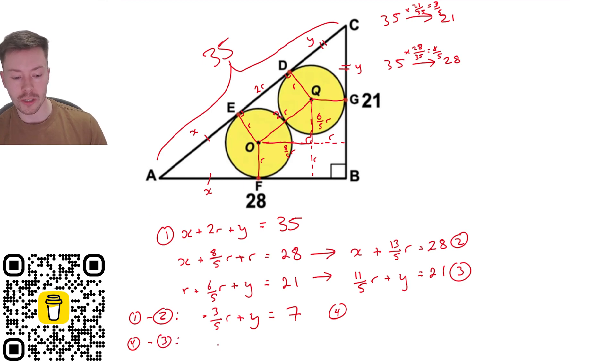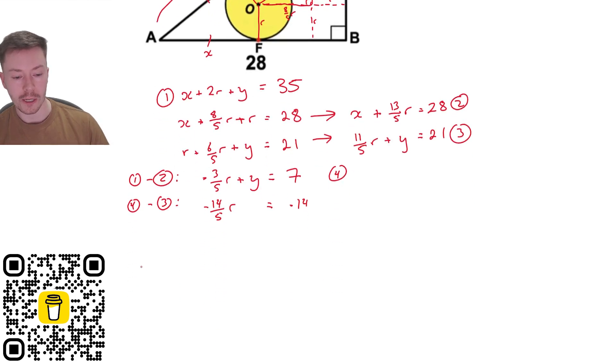So then if we do equation 4 the one we've just got take away equation 3 so we're going to do minus 3 fifths r take away 11 over 5r that's going to leave us with minus 14 over 5r the y's will cancel and then we get 7 take away 21 which leaves us with negative 14. Nearly done there so you can see we're going to have a solution here divide both sides now by minus 14 over 5 and we've got r is equal to 5.